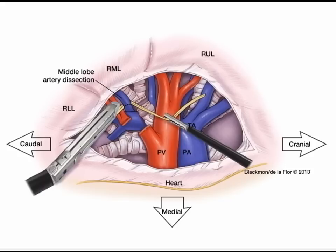Once that vessel branch has been divided, all you have to do is dissect the fissure and staple and divide it, completing a right middle lobectomy. Once the right middle lobectomy has been performed, place the right middle lobe into an endocatch bag and remove it through the utility port.